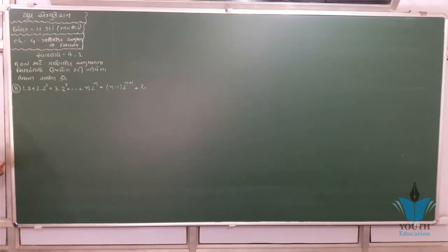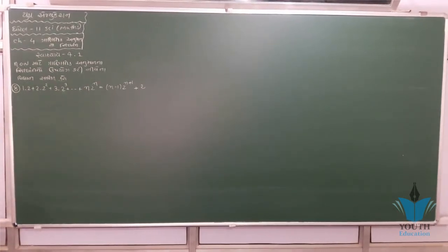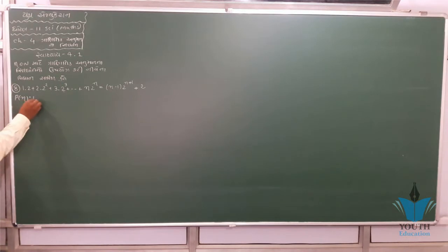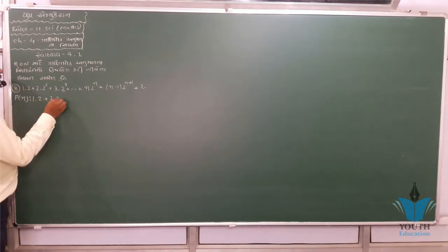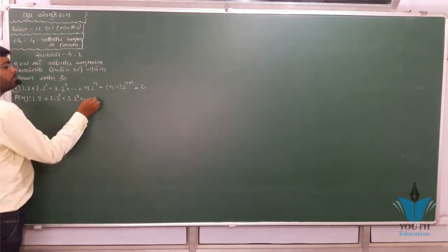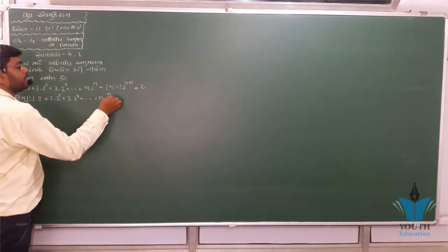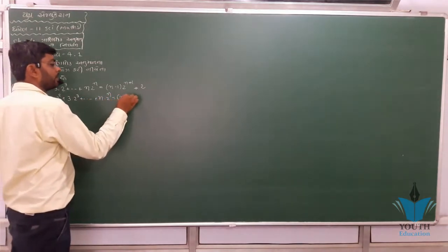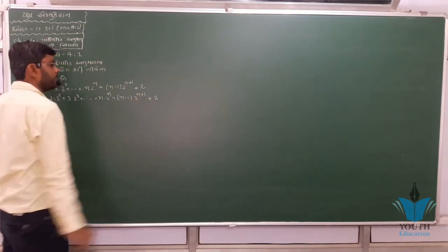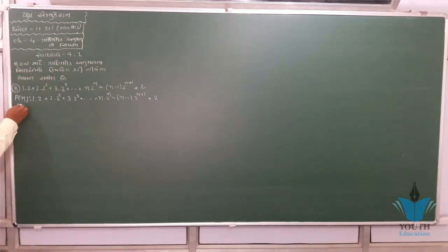NAMASKAR. We have to prove by induction: P(n) states that 1·2 + 2·2² + 3·2³ + ... + n·2ⁿ = (n-1)·2^(n+1) + 2. Let us define P of n as this statement. P(1) is to be checked first.